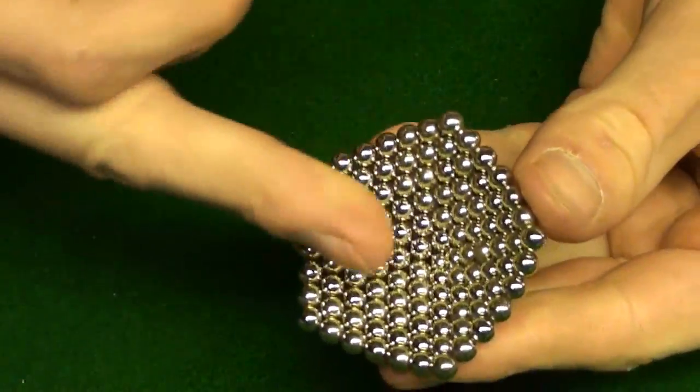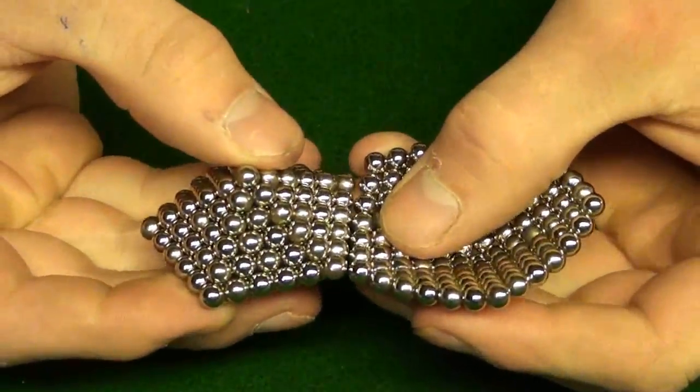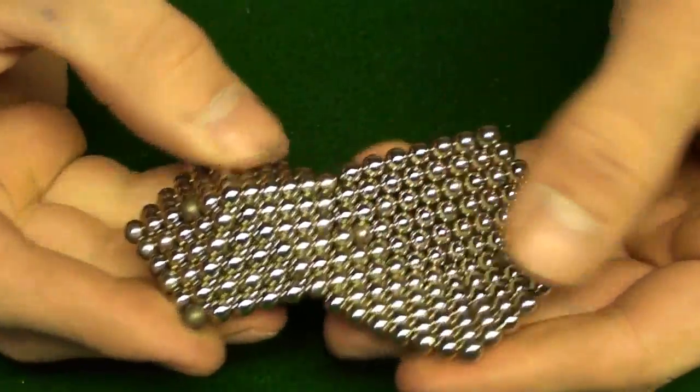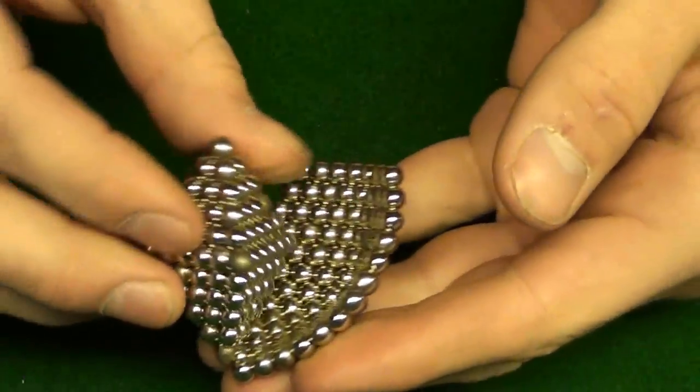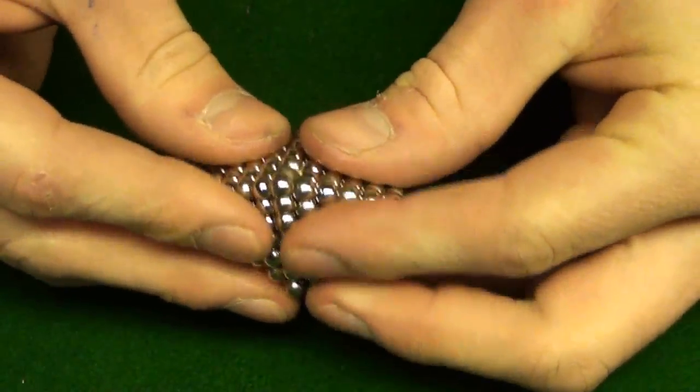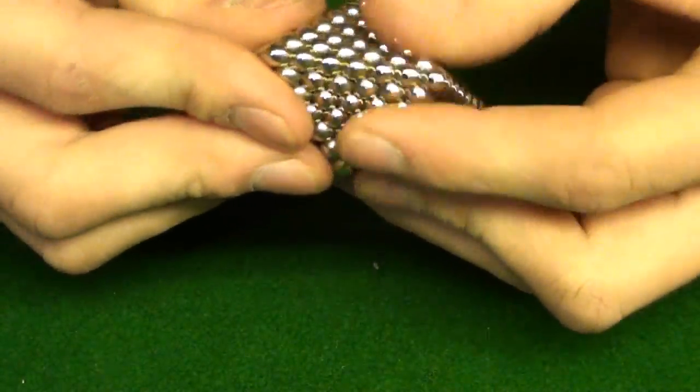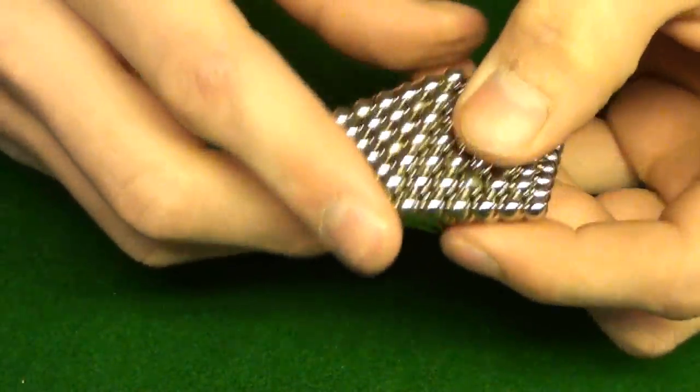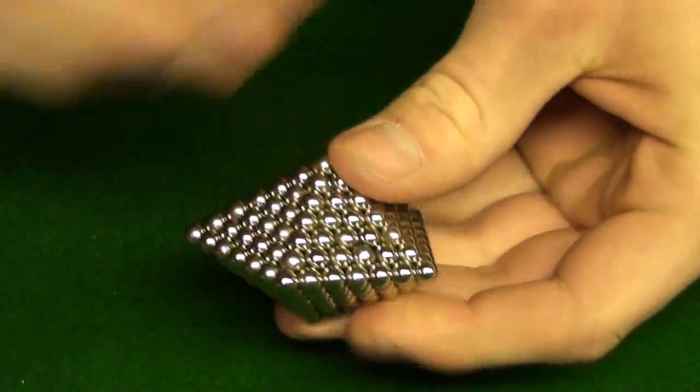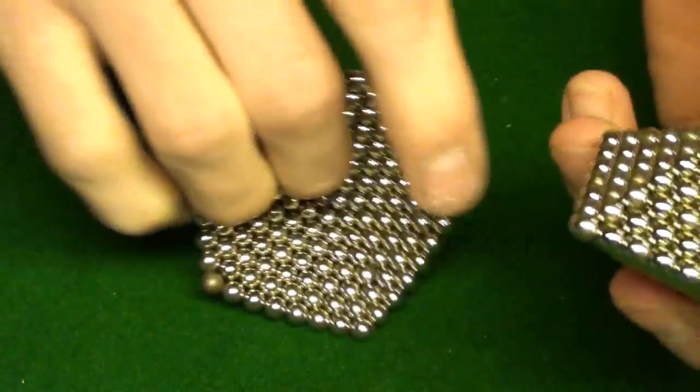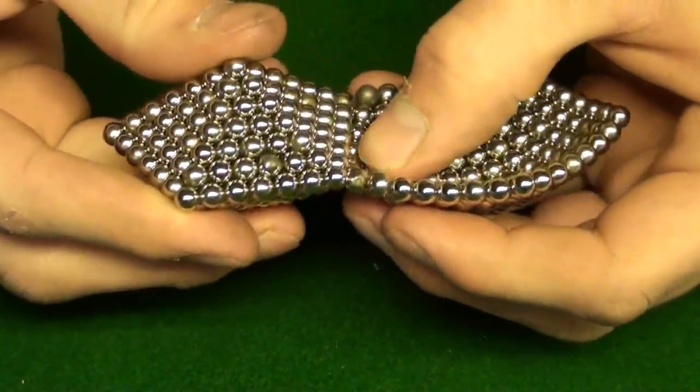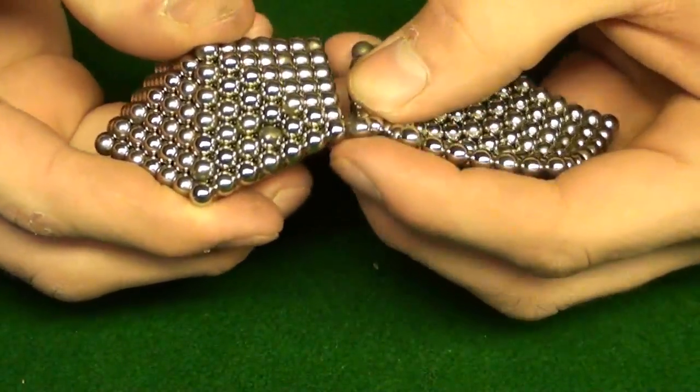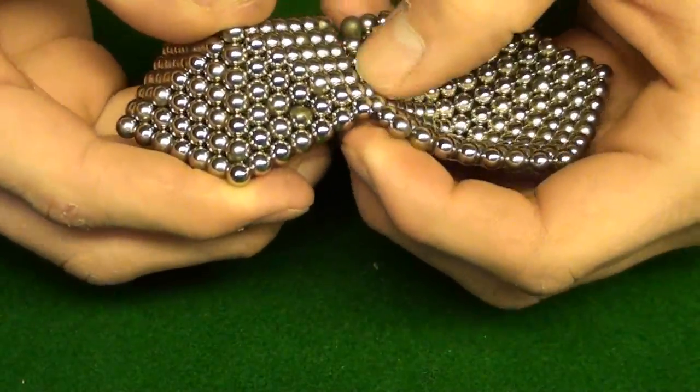So the one that we made 6 layers of, we're just going to attach to our core. Bend it up, drop it in like that. And even if you screw up, like I've actually squished this thing and just played with it for a bit, and it molded right back into this shape. Just because it's so structurally formed I guess, it's really cool.